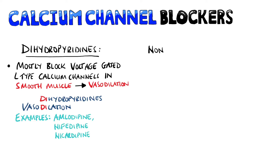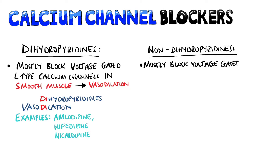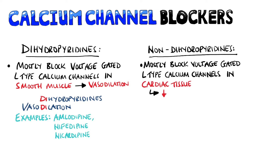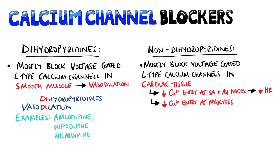Non-dihydropyridines block voltage-gated L-type channels mostly in cardiac tissues, so they predominantly have cardiac effects. They decrease the heart rate by lowering calcium entry at the SA and AV nodes, leading to slower conduction. They also decrease contractility of the heart by decreasing calcium entry into the myocytes.